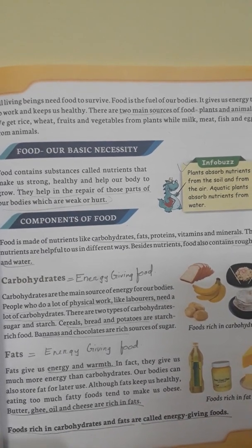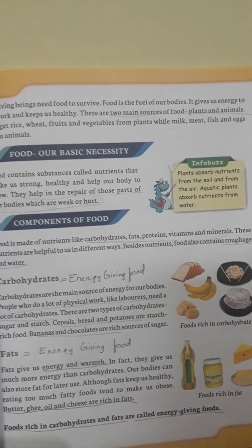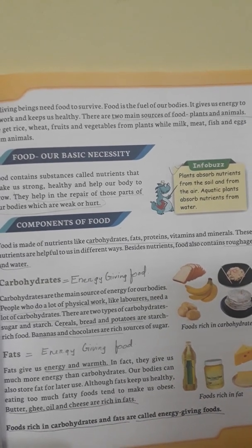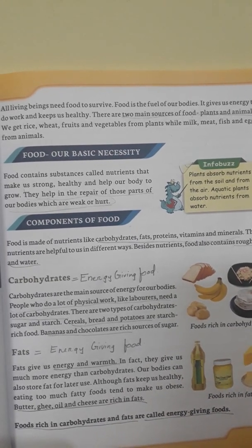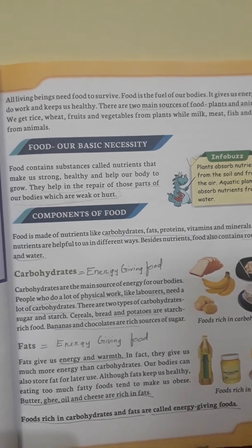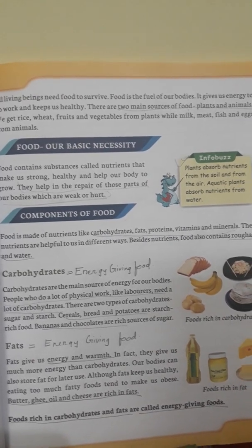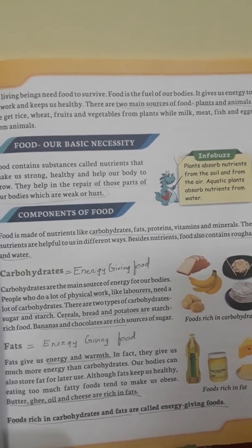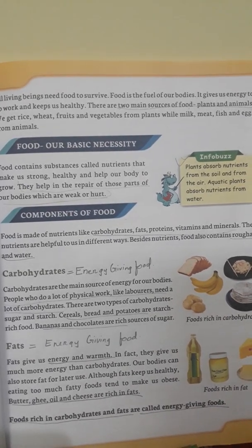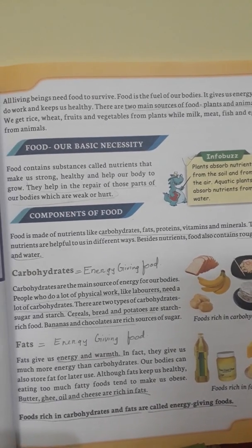Two main sources of food are plant sources and animal sources. From plant sources we get rice, wheat, fruits and vegetables. While from animal sources we get milk, meat, fish and eggs.